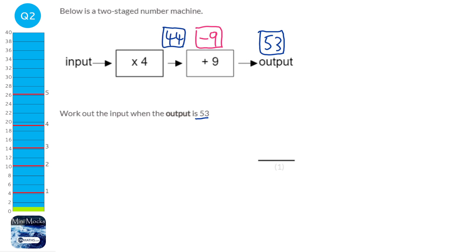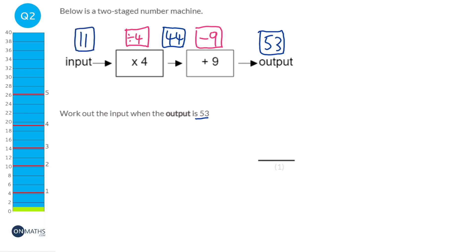The next step says times 4, so the opposite would be divided by 4. We do 44 divided by 4, which gives us an input of 11. Let's check the whole thing: we put in 11, 11 times 4 is 44, 44 plus 9 is 53. So we know we've got it correct.